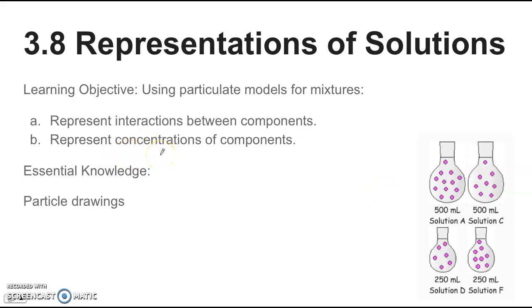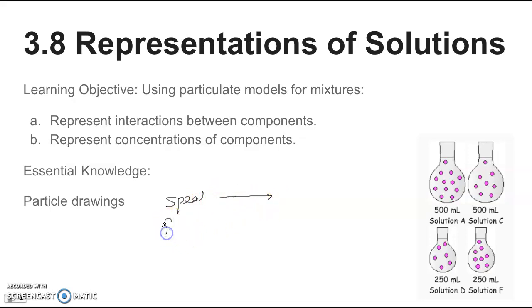That's how you represent concentration — just by showing the number of particles. As far as interactions go, generally you're showing how the particles are moving or what forces they have within the mixture. If you're talking about the speed of a particle, the length of the arrow is how we depict the speed, so a longer arrow means they're moving faster. If you're talking about a force being applied, we show that with arrows also, but a thicker arrow means a stronger force. So: longer arrow means a faster-moving particle, and thicker arrow means a stronger force.